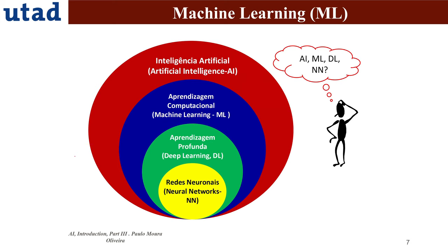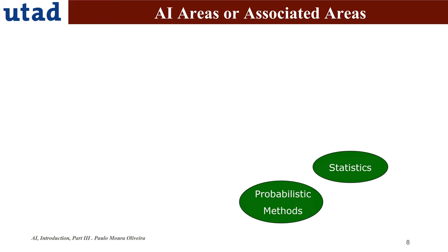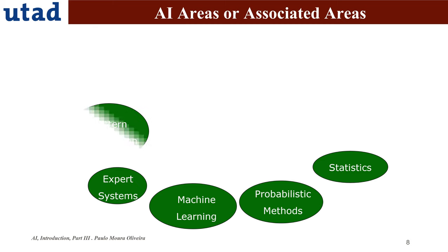This is also a kind of typification. The big outside circle is artificial intelligence in red, then we have machine learning in blue, deep learning in green, and inside deep learning we have neural networks. So the order is: artificial intelligence, machine learning, deep learning, and neural networks. The associated artificial intelligence areas include statistics, probability, probabilistic methods, machine learning, and expert systems.